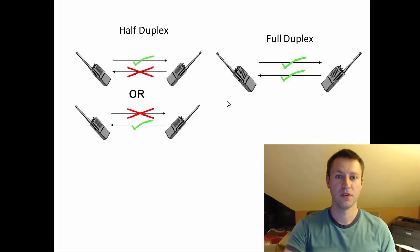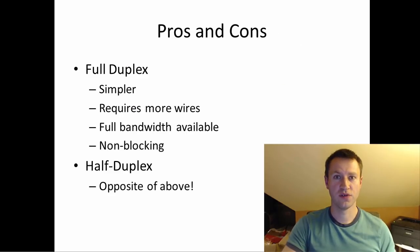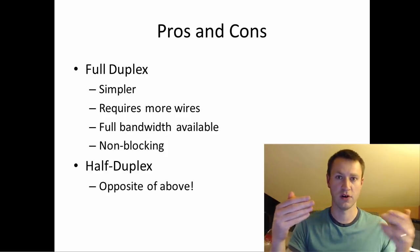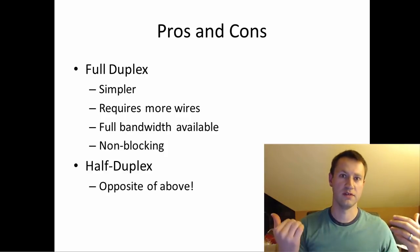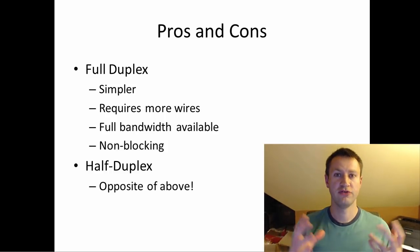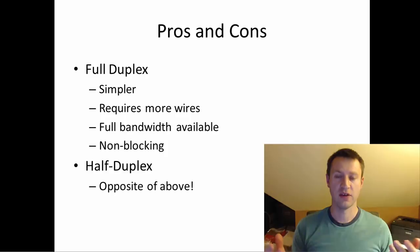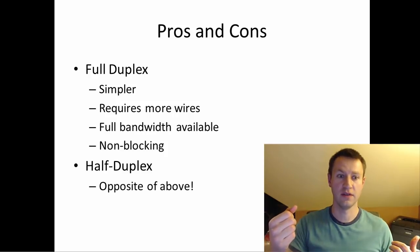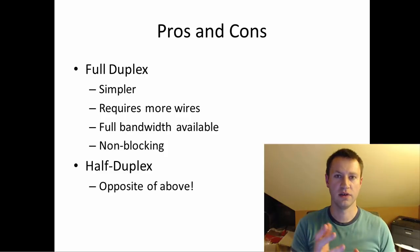Full duplex means both people talking and both people listening at the same time — data can go in both directions simultaneously. Full duplex is generally simpler: the transmitter is always a transmitter, the receiver is always the receiver. I'll show a block diagram in a minute. Things are stable once set up, but the downside is it requires more physical wires — you need to run more pairs or individual strands of copper for each direction of communication. More bandwidth is available as well.